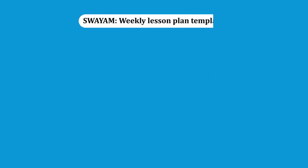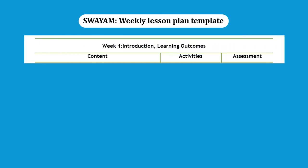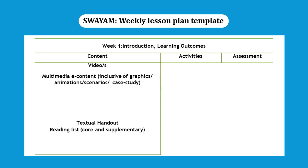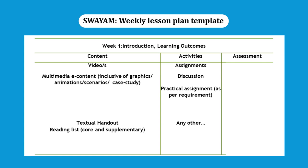Given here is a template of the weekly lesson plan for courses on the Swayam platform. The learning outcomes are spread across content, activities, and assessment. The learners get the content to read and learn from. Then they apply the concepts they learned through activities such as assignments, discussions, etc. At the end, the learners are subject to assessment through different means like peer review, quizzes, different tests, etc.